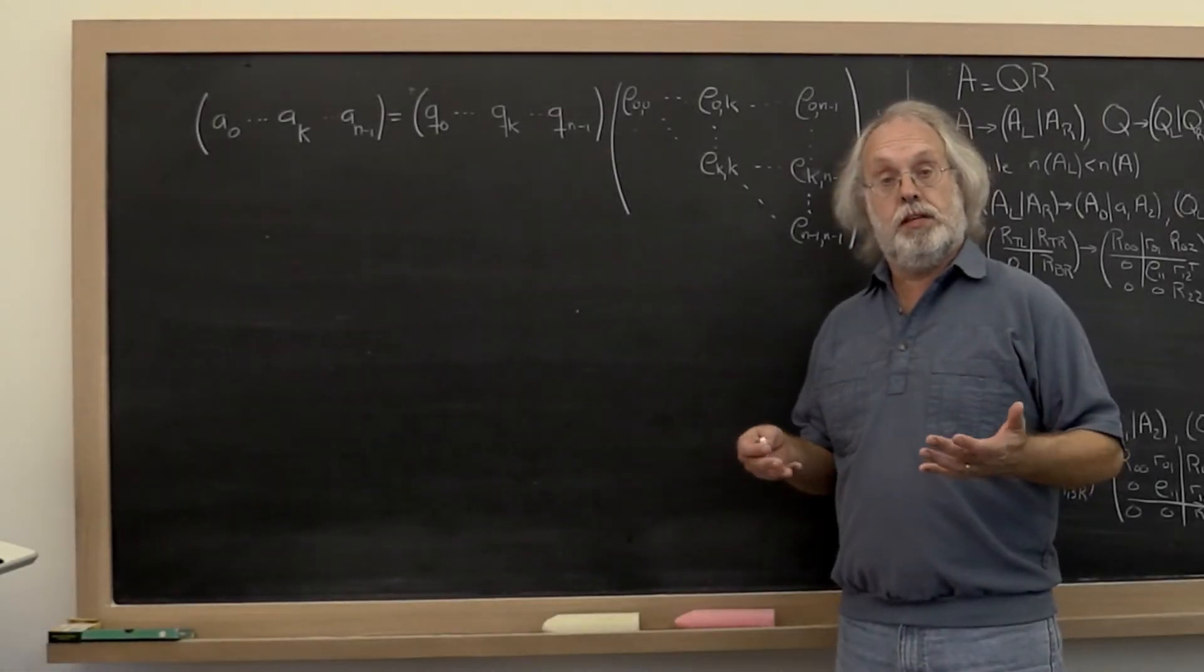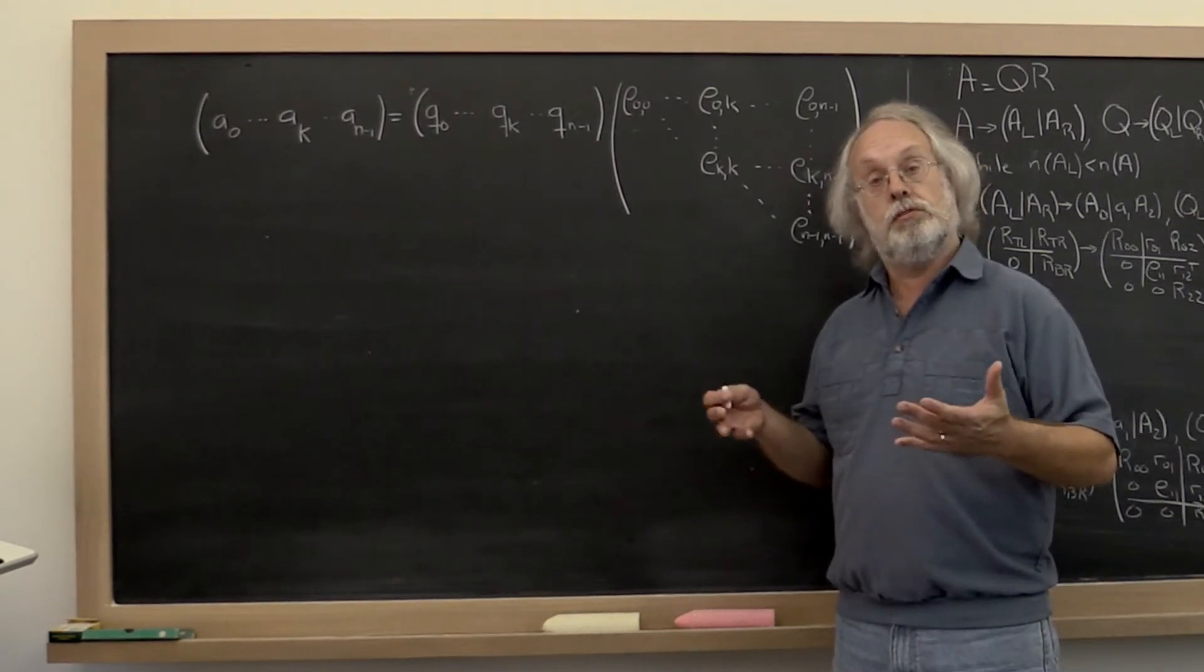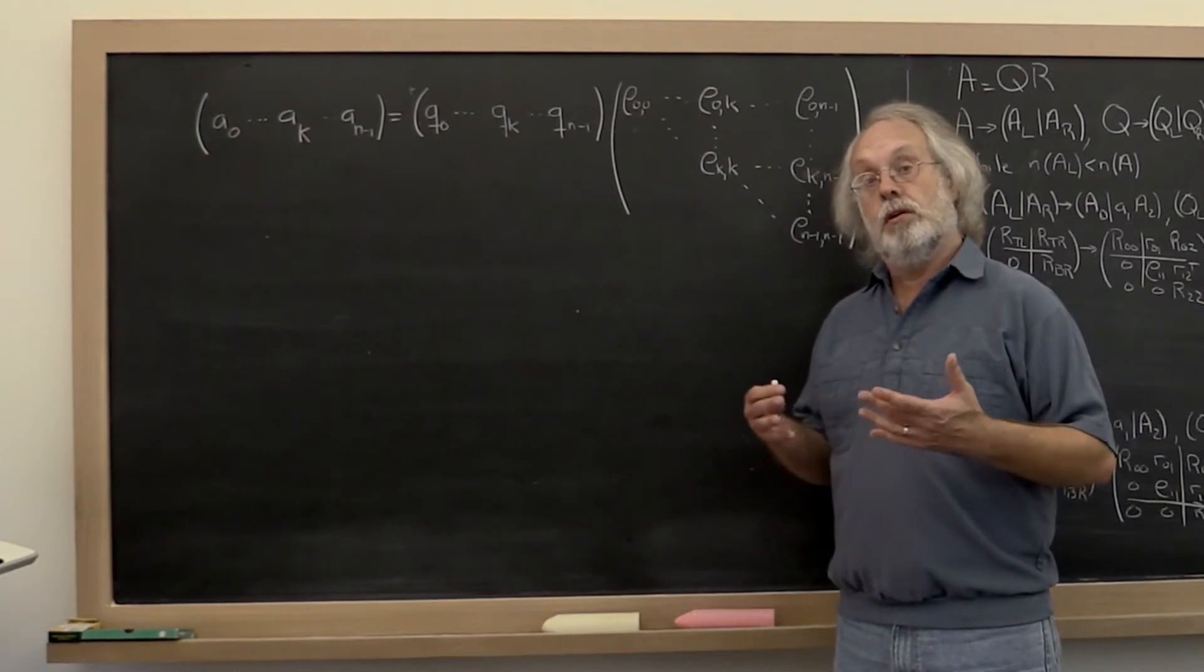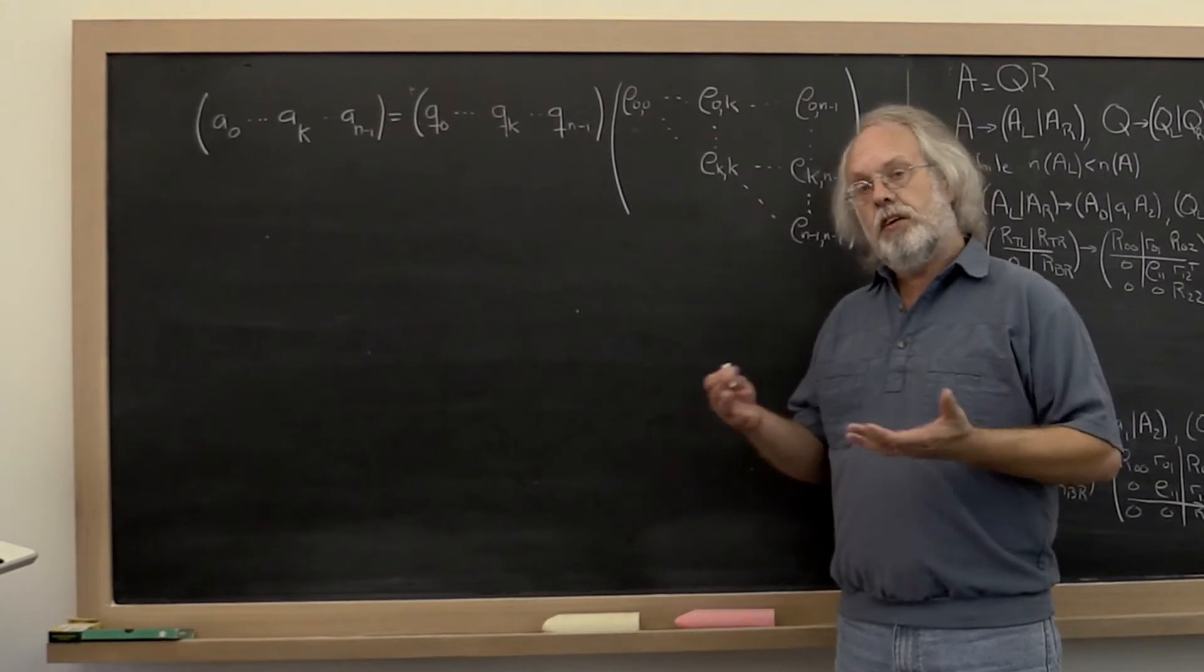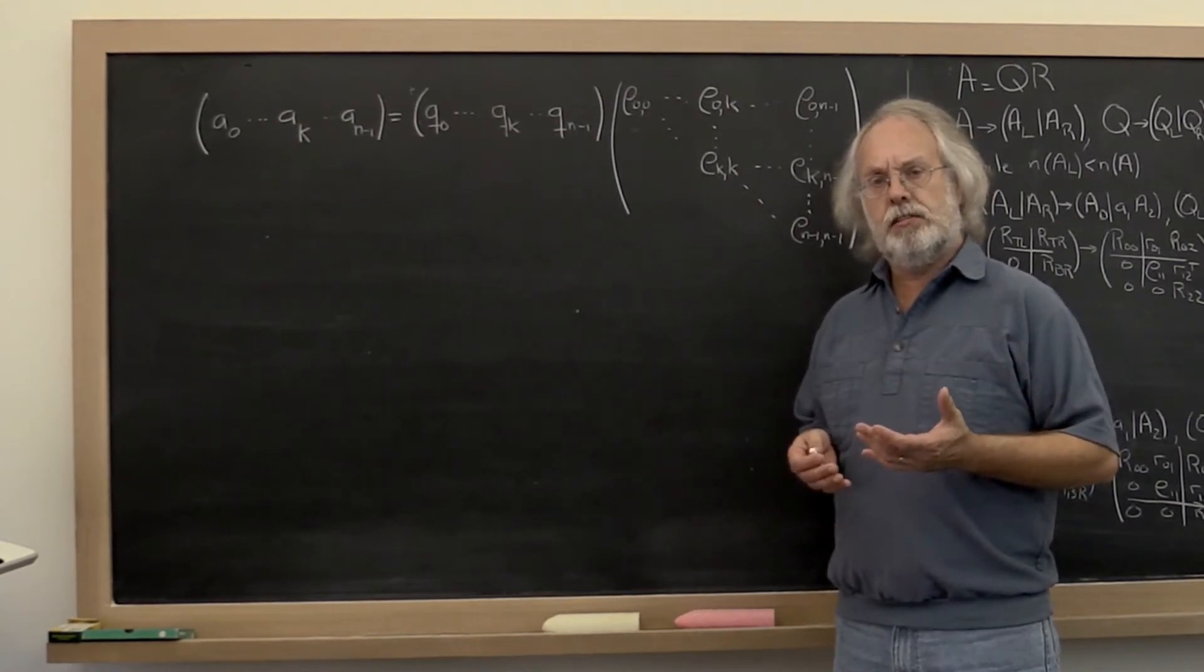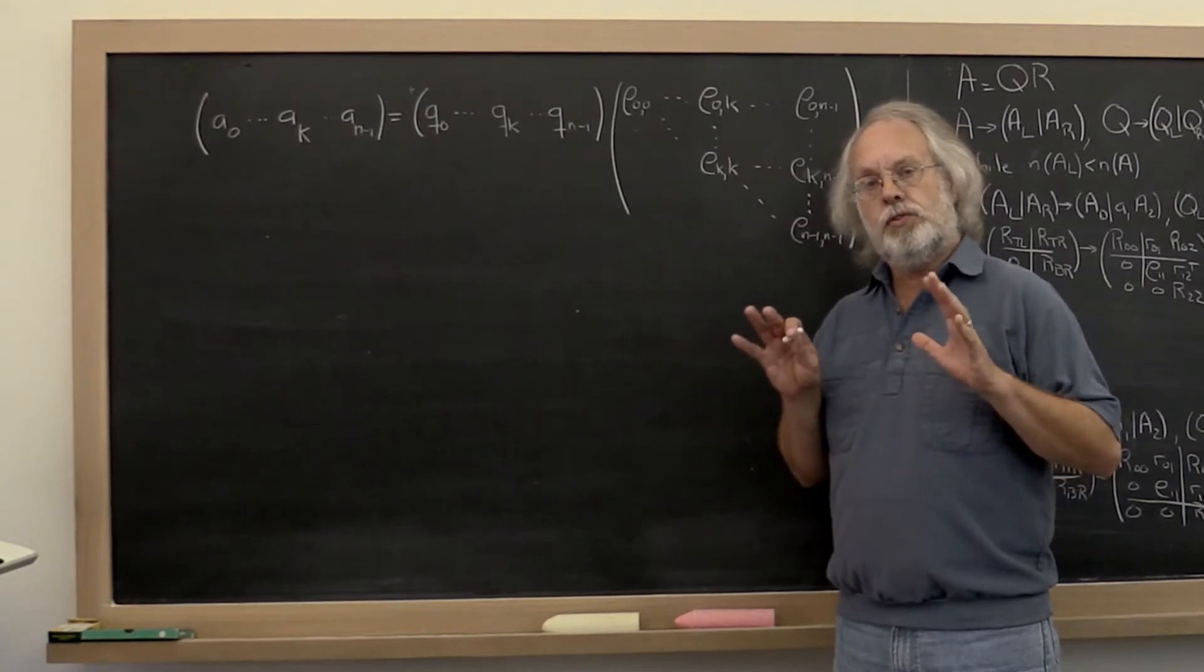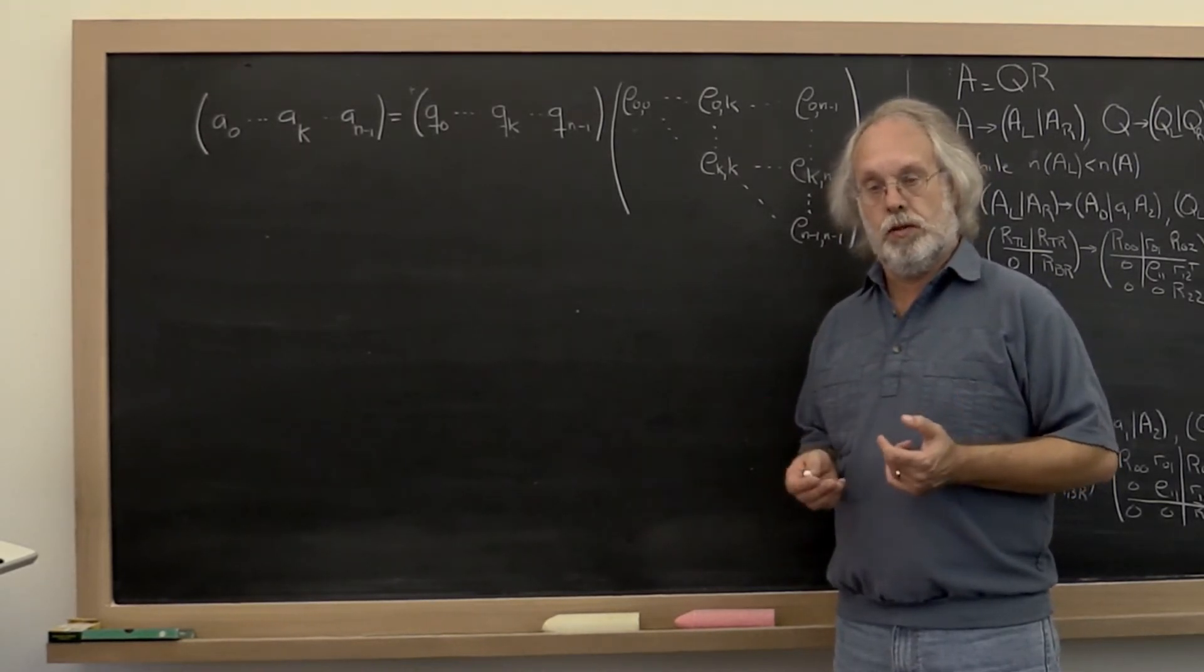The way we've described the Gram-Schmidt orthogonalization process, and of course since that computes the QR factorization, therefore how to compute the QR factorization, involves a lot of indices. Our experience is that if we can just stay away from those details, it becomes easier to see what the algorithm is.